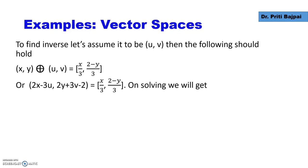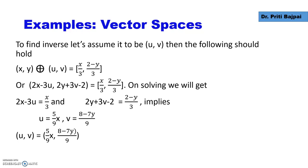When we add the two points, we get (2x - 3u, 2y + 3v - 2) and we'll equate it to our identity. If we solve by equating corresponding points, we'll get u = (5/9)x and v = (8-7y)/9.